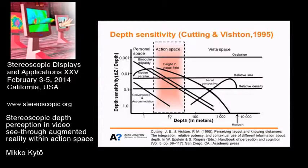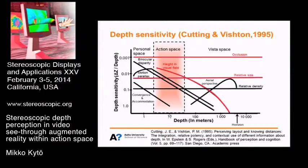Our question was: which depth cues should be added to the scene in applications within action space? Starting from the most sensitive depth cues, we can see there is occlusion first, then height in visual field, relative size, motion parallax, and binocular disparity. These are the most sensitive depth cues within action space.